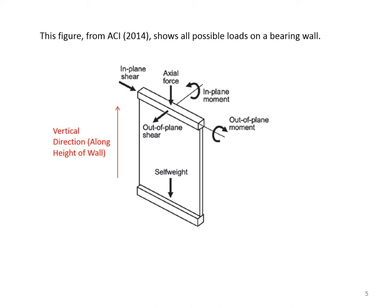The vertical direction, as specified in ACI, is along the height of the wall. The horizontal direction is along the length of the wall.